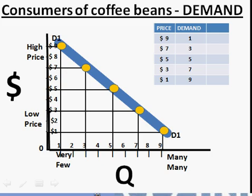Now we'll label our curve with D1 at both the top and the bottom. The D stands for demand. The 1 stands for the first demand curve that we are discussing in this particular analysis.